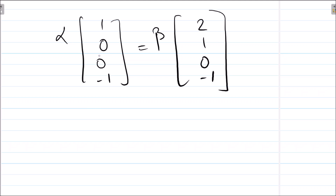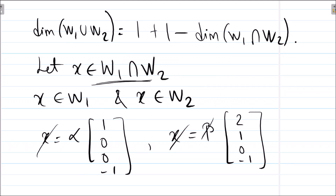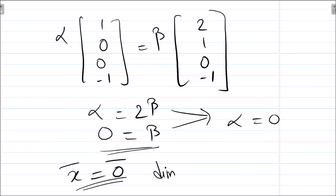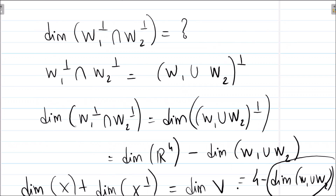Comparing components: the first gives α = 2β, and the second gives 0 = β. These two conditions imply α = 0 and β = 0, so x is the zero vector. Therefore dim(W1 ∩ W2) = 0, which means dim(W1 ∪ W2) = 1 + 1 − 0 = 2, and so dim(W1⊥ ∩ W2⊥) = 4 − 2 = 2.